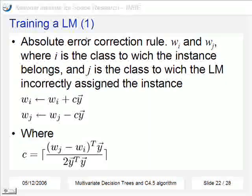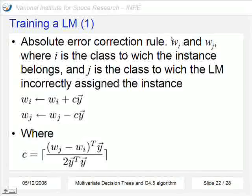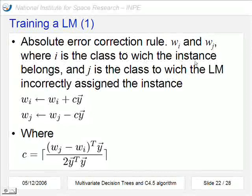To train a linear machine, we use the absolute correction rule as one approach. We use these two weights where i is the class to which the instance really belongs and j is the class to which the linear machine made an incorrect classification. So, at each iteration we adjust these values according to these equations where this constant c is calculated as we can see here.